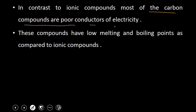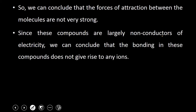Most of the carbon compounds are poor conductors of electricity and have low melting and boiling points compared to ionic compounds. Ionic compounds have very high melting and boiling points, whereas carbon compounds have lower melting and boiling points. Ionic compounds are good conductors of electricity in the molten state or in solution form, whereas covalent compounds are poor conductors of electricity. The nature of bonding decides the properties of the compounds — this point you have to keep in mind.